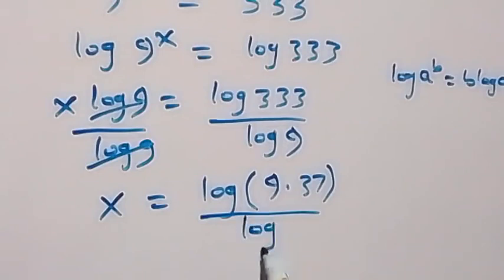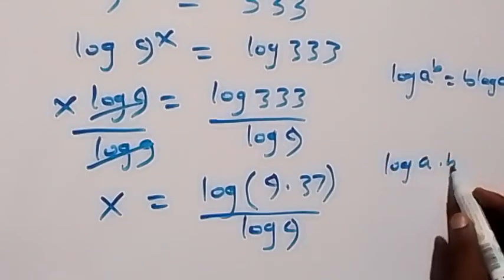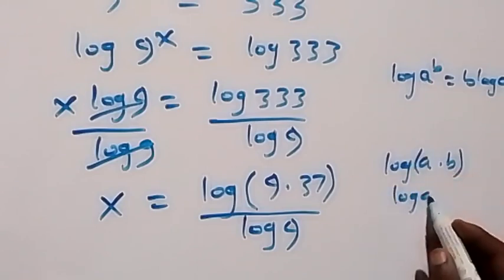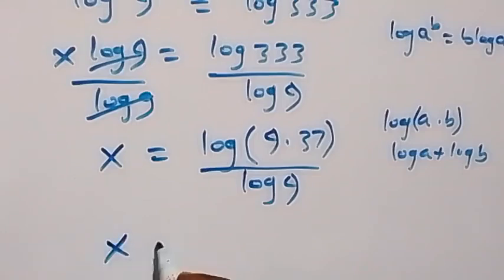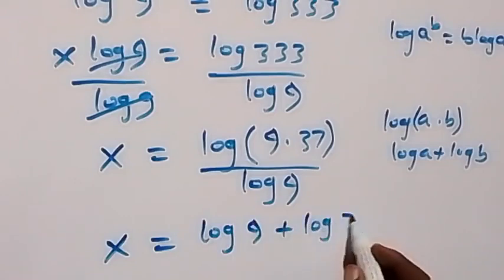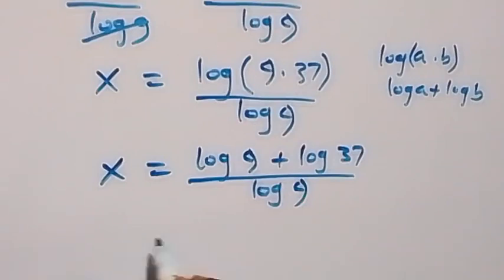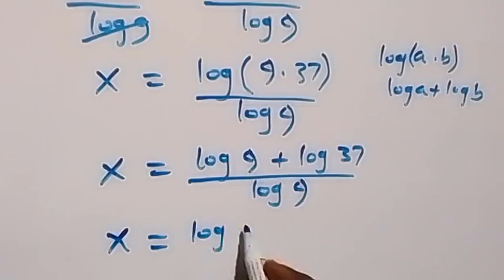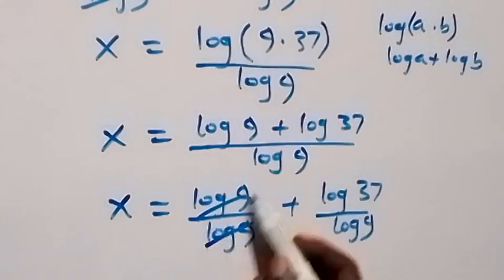From the law of logarithms, when we have log(a times b) we can write this as log(a) plus log(b). So x equals log(9) plus log(37), all over log(9). We can separate this into two fractions: x equals log(9) over log(9), plus log(37) over log(9). Log(9) over log(9) cancels to give 1.